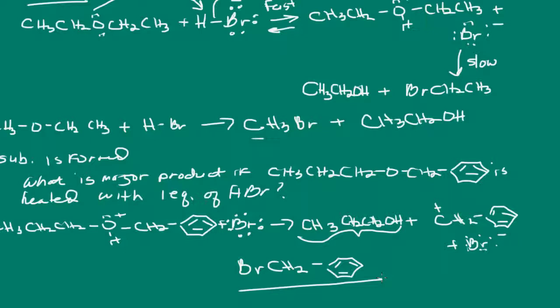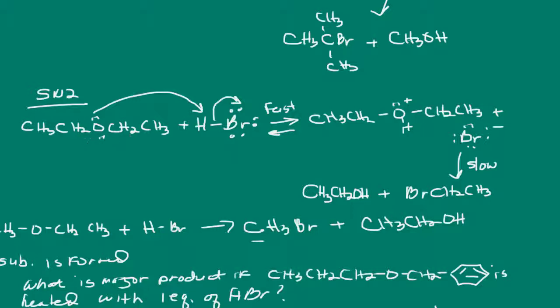But, what if this reaction mixture would have been heated with excess hydrogen bromide? Well, in that case, we would end up with two alkyl halides. What would happen is, if we had excess hydrogen bromide, the alcohol that's formed as a product would then react with the hydrogen bromide to form another alkyl halide. So, in this case, we would have two alkyl halides form. Up here, if we would have had excess hydrogen bromide, then, of course, the only alkyl halide that would form would be the ethyl bromide.